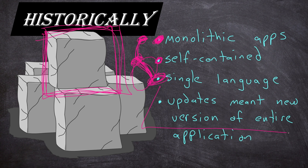You are limited to that single language or developing all those weird tie-ins together. When it comes to updates, that usually means the entire application receives an update. There's a new version 1.3 of the app, and the person downloads that new version and installs it on their computer, getting an entirely new self-contained monolithic app. A version means an entirely new version of the whole program.